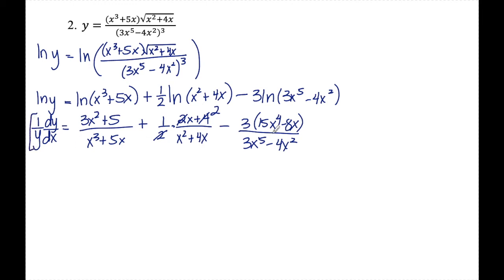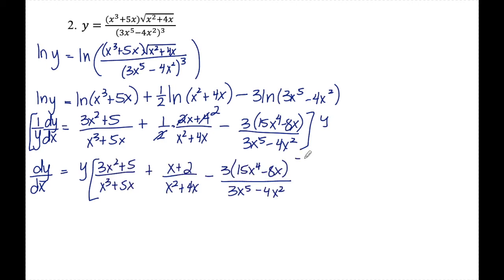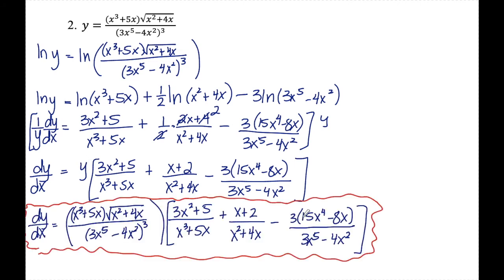The next step is to multiply both sides by y, giving dy/dx equals y times the whole expression. The very last step is to replace y with what it was equal to originally. That is the final answer for dy/dx. Again this is still a little complicated, but much easier than using all those different differentiation techniques.